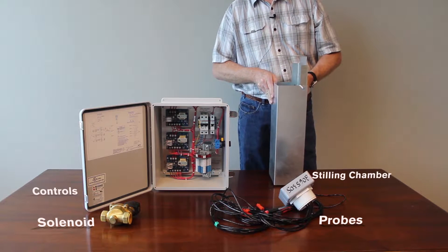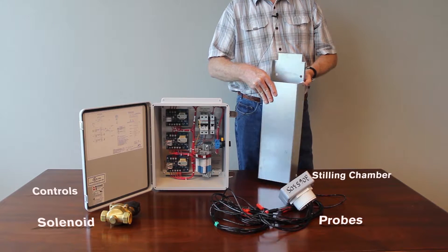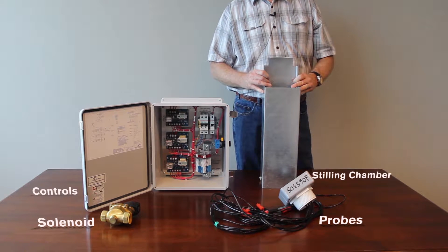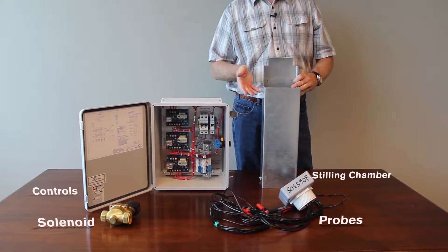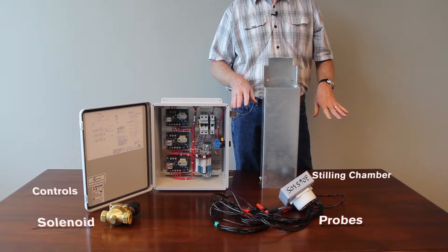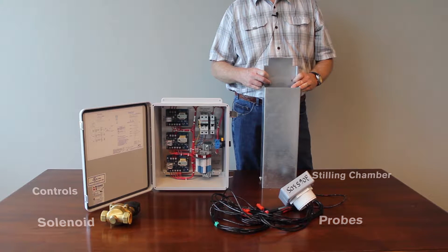As you'll notice it's just a square chamber with an open bottom. The stilling chamber sits off the floor about an inch so mud doesn't clog it up and it has two primary purposes like we said before: to hold the level probes and also to calm the water that might be on the outside. The water inside this chamber is calmer so you get more accurate readings.